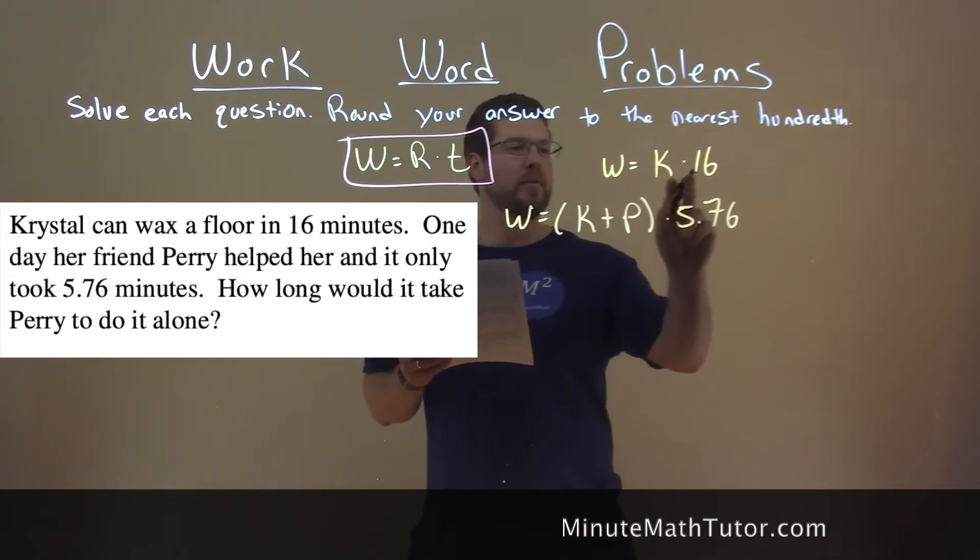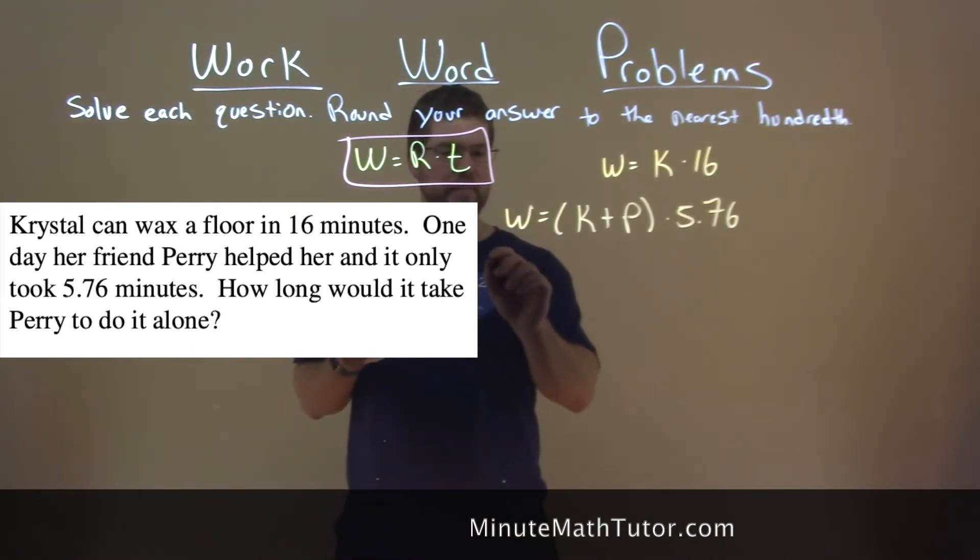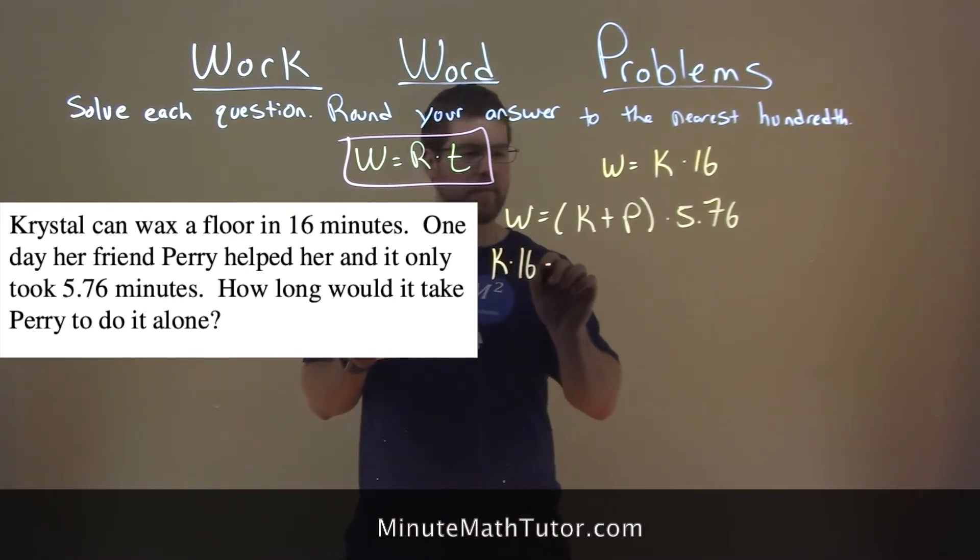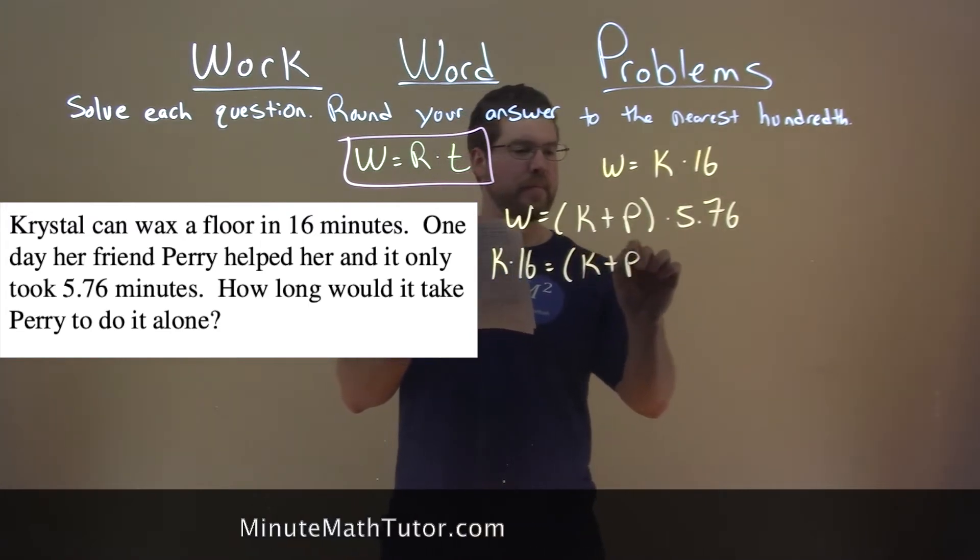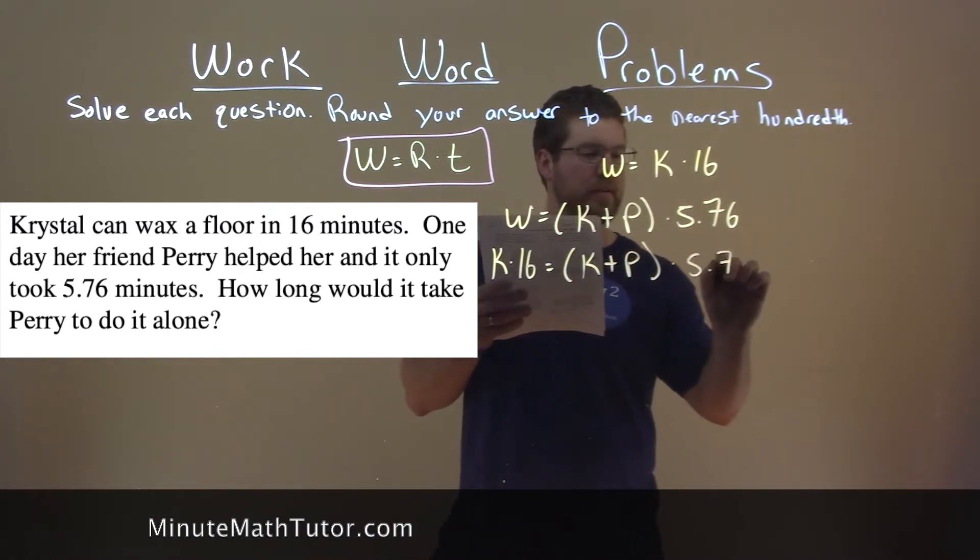Well, we know that work is equal to k times 16. So we have k times 16 here is equal to k plus p times 5.76.